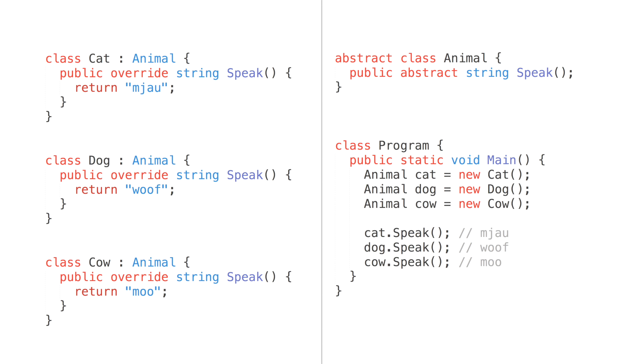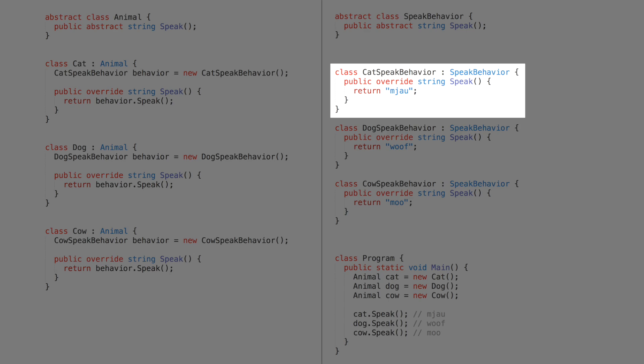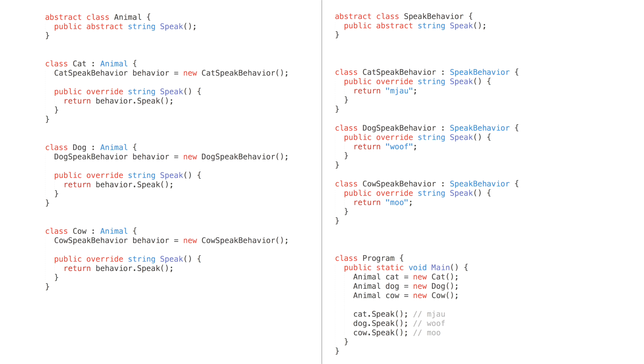The Cow says moo, the Cat says meow, and so on. Naively, we might hard-code this behavior into the speak method of each specific class — moo in the Cow class, meow in the Cat class. In a bigger system with more complex behavior, you might think to extract this into another class, so you'd have CowSpeakingBehavior.speak and CatSpeakingBehavior.speak, creating two hierarchies: animals and speaking behaviors.